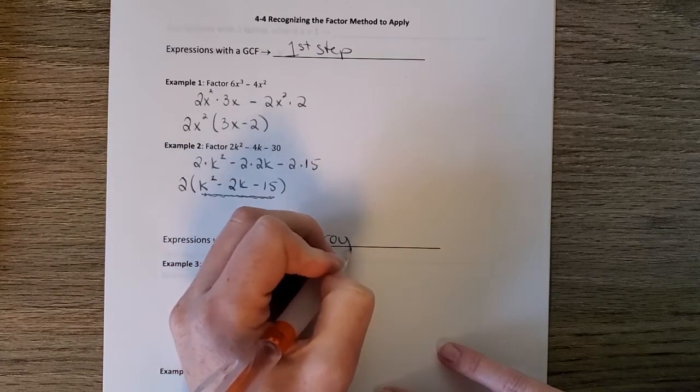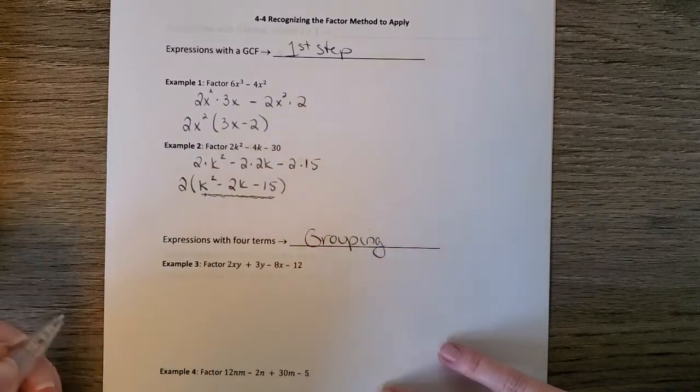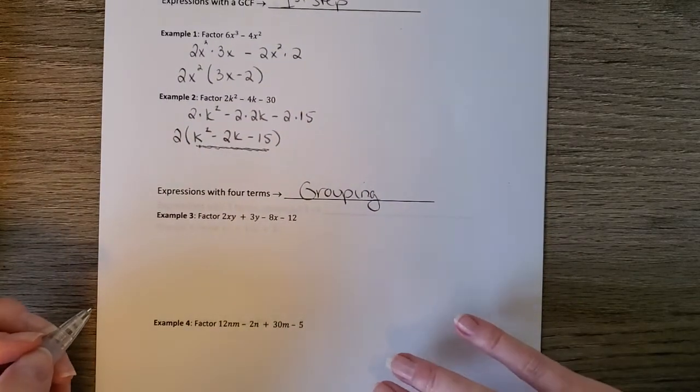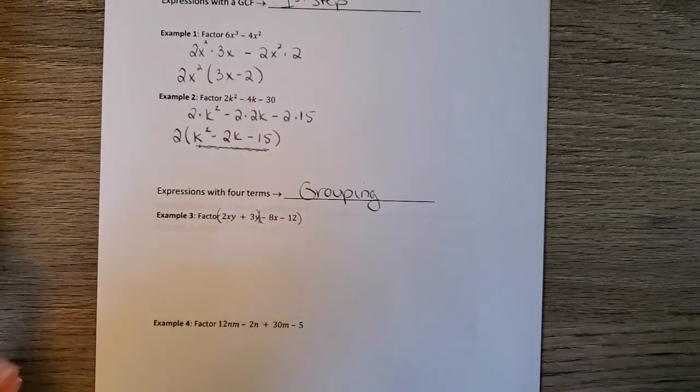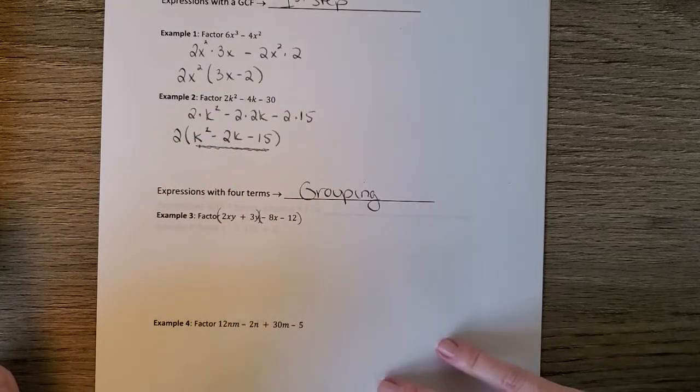Factoring four terms is always done by grouping. And again, you can group in any order. I usually try the first two, last two, and do it that way, and that way I don't have to rearrange, but you can rearrange if you want.